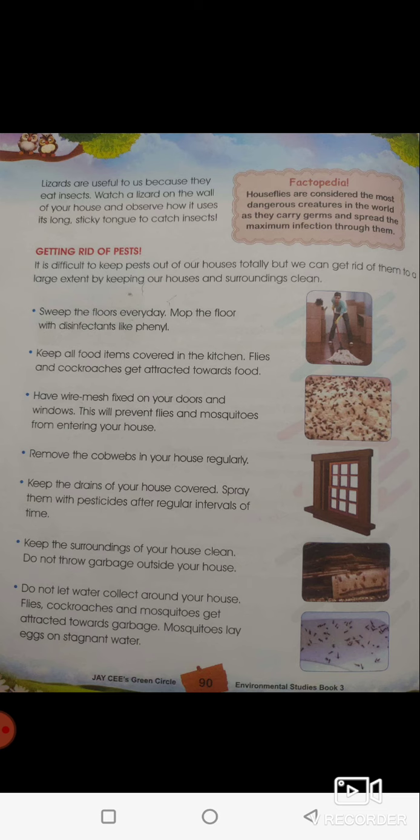In order to keep the house clean and get rid of those unwanted animals, it is difficult to keep pests out of our house totally. The more you get rid of them, the more they keep coming, because they multiply very fast in number. Cockroaches grow very fast — if we leave one cockroach in our kitchen, in one week there will be so many. But we can get rid of them to a large extent by keeping our houses and surroundings clean.